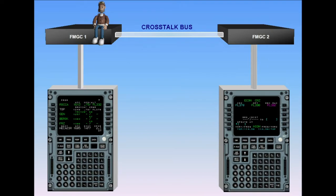The autothrottle is driven by the master FMGC. When both FMGCs crosstalk, they are in dual mode of operation. Note: when flight directors 1 and 2 are on, each FMGC drives its flight director and FMA on its on-side PFD.